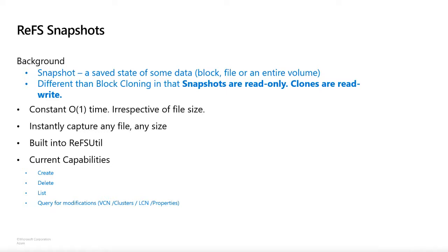A snapshot is basically a save state of some data — that data can be in block form, file form, or an entire volume. You might wonder how this is different from block cloning. ReFS has a great block clone feature, but the main difference is that snapshots are meant to be read-only, whereas clones can be read and written to. Snapshots also take constant time irrespective of file size — you can have a super large VHD, take a snapshot, and it takes the same amount of time as a tiny text file. It's O(1). You can capture any size of file with no limit.